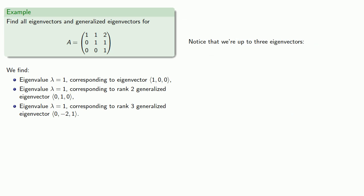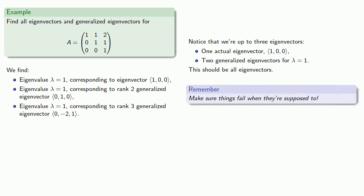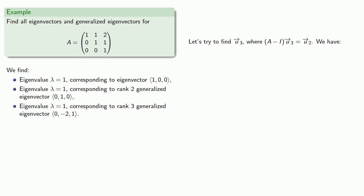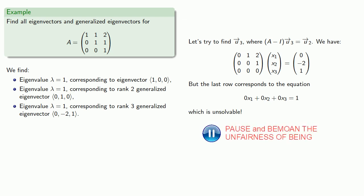We're now up to three eigenvectors: one actual eigenvector (1, 0, 0) and two generalized eigenvectors for lambda equals 1. This should be all the eigenvectors. A useful strategy: make sure things fail when they're supposed to. We should not be able to find a fourth eigenvector this way. When we try to find a vector that maps onto the last eigenvector (0, -2, 1), the last row corresponds to the equation 0x1 + 0x2 + 0x3 = 1, which is unsolvable. That's a good thing — we didn't want a fourth eigenvector for a 3×3 matrix.